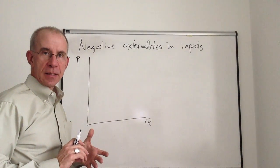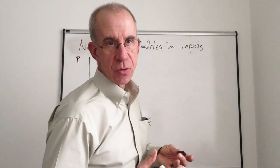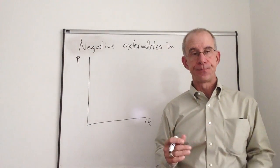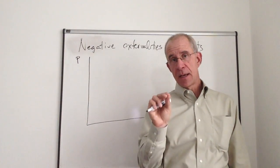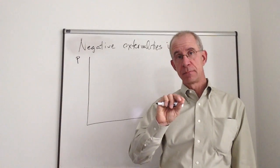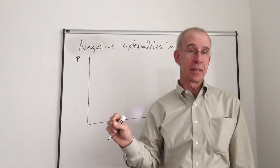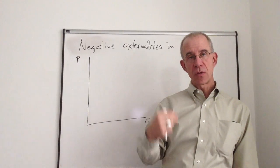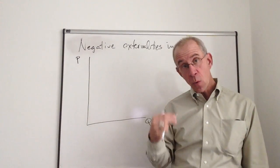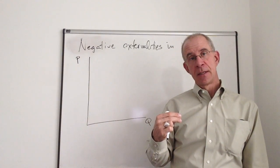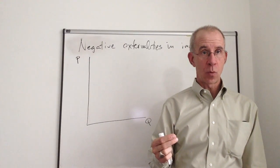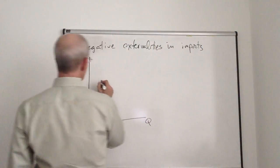I want to analyze the proper response to a negative externality in an imported good. This is not an externality in production domestically or consumption domestically. It's instead when the social cost of importing the good exceeds the privately perceived cost of importing that good.